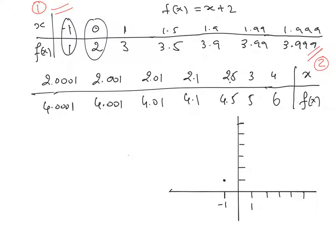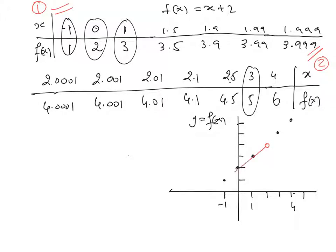When x = -1, f(x) = 1 — one point here. When x = 0, f(x) = 2. We have an open circle at x = 2 because the function is undefined there. When x = 3, f(x) = 5; when x = 4, f(x) = 6. Let's draw the function — it is a linear function, undefined at x = 2.